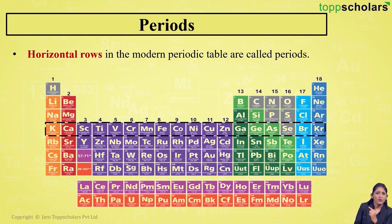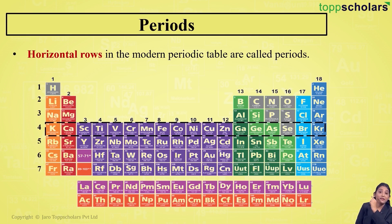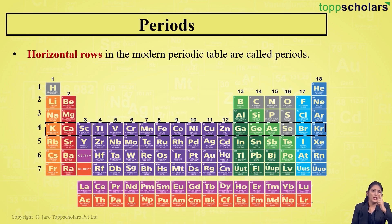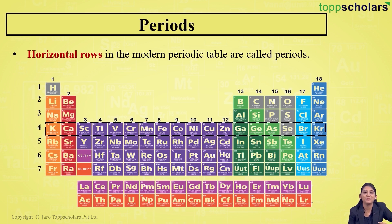How many periods do we have? Yes, we have seven periods. These periods are numbered from 1 to 7. So, horizontal rows in the modern periodic table are called as periods, and there are seven periods in the modern periodic table.